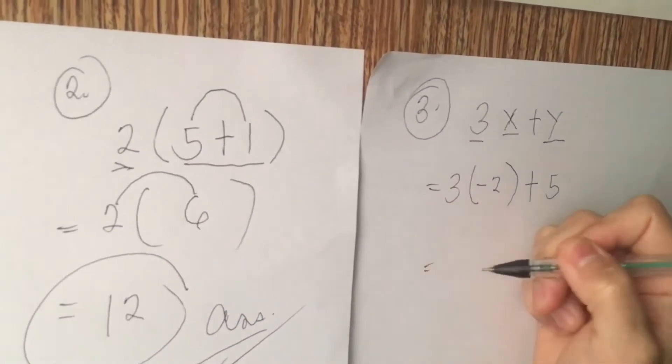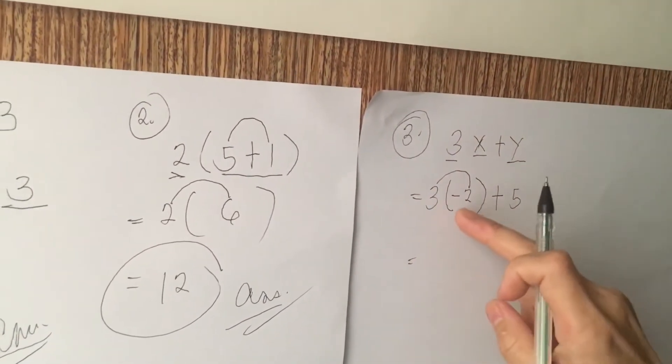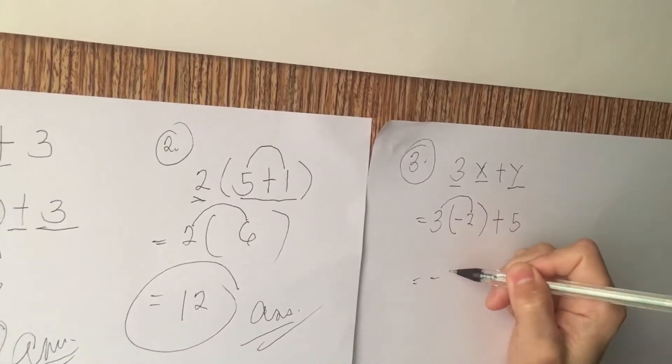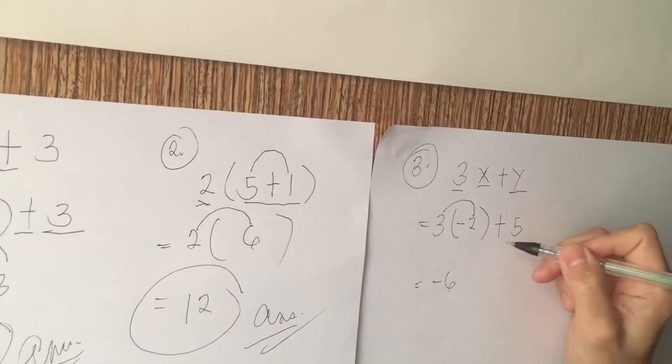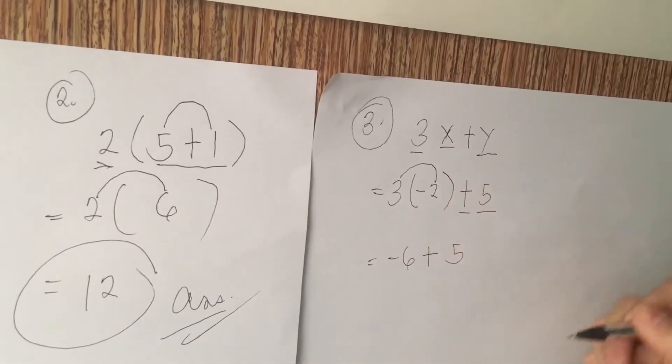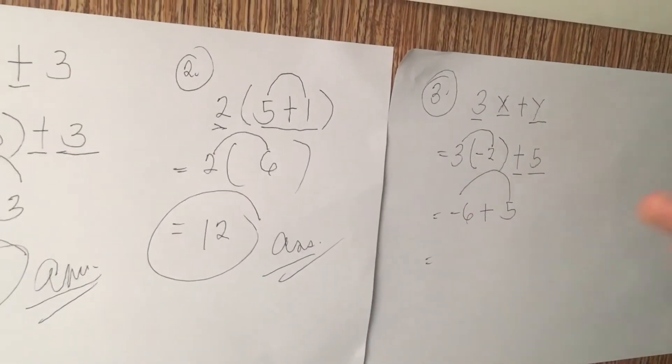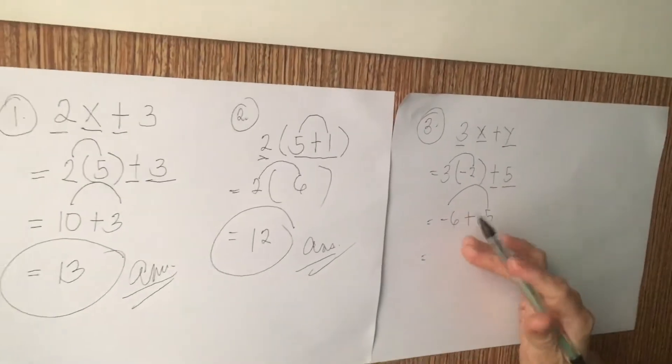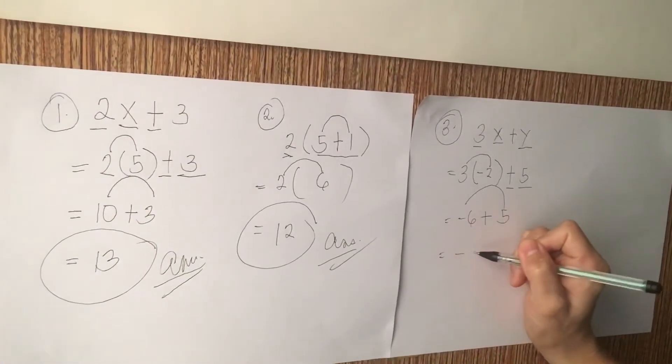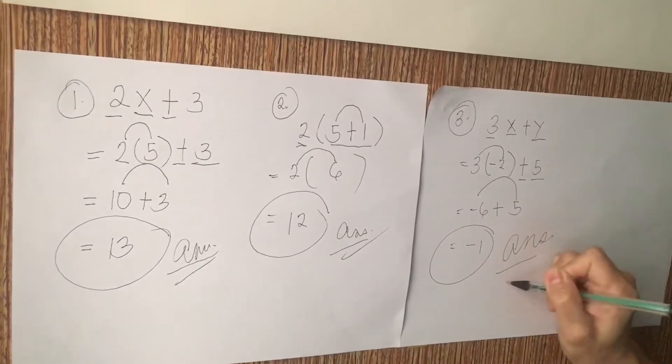The third step we have. We are going to multiply 3 times negative 2. The answer is negative 6. Next, plus 5. This will be the last and final answer. When you add negative 6 plus 5, the answer is negative 1. This will be our final answer.